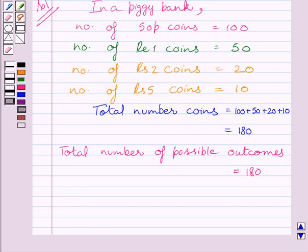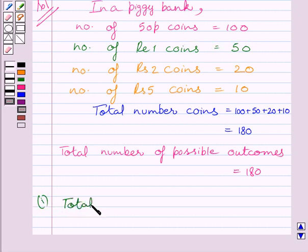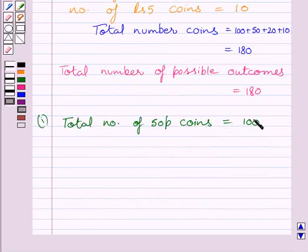In the first part of the question, we have to find the probability that the coin that will fall out will be a 50 Pesa coin. We know total number of 50 Pesa coins is equal to 100. One of these coins can be chosen in 100 ways, so total number of outcomes favorable to the 50 Pesa coin is equal to 100.